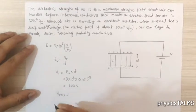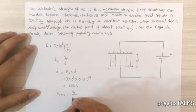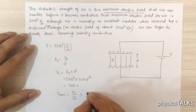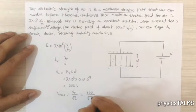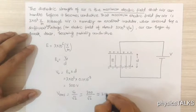RMS voltage is V0 by root 2, equal to 300 by root 2. If you calculate, it's almost 212 volt.